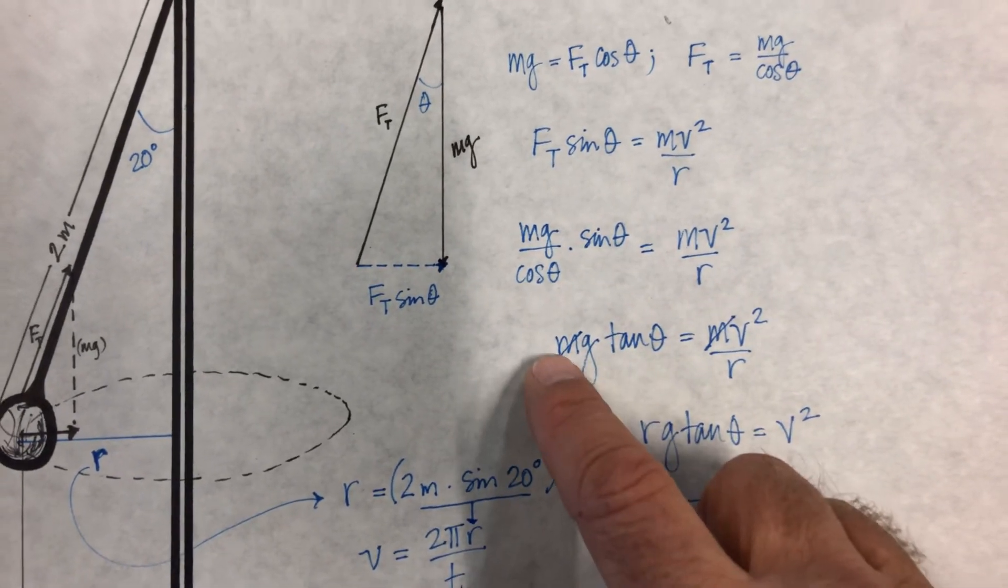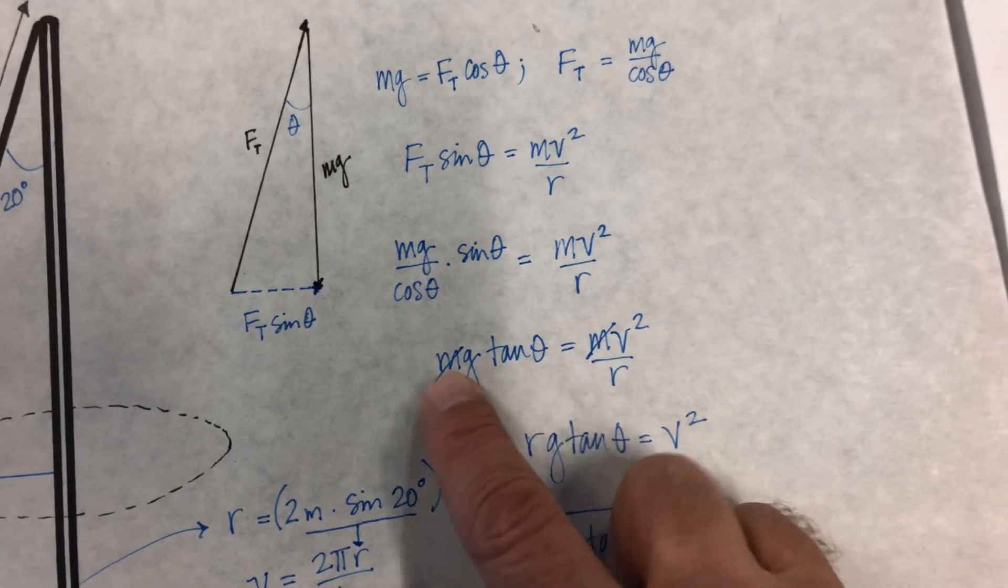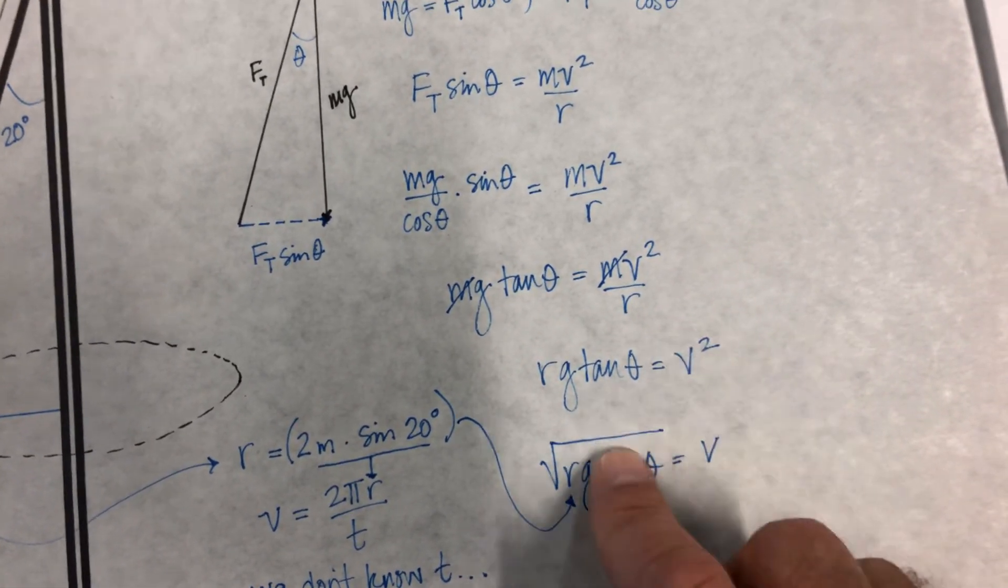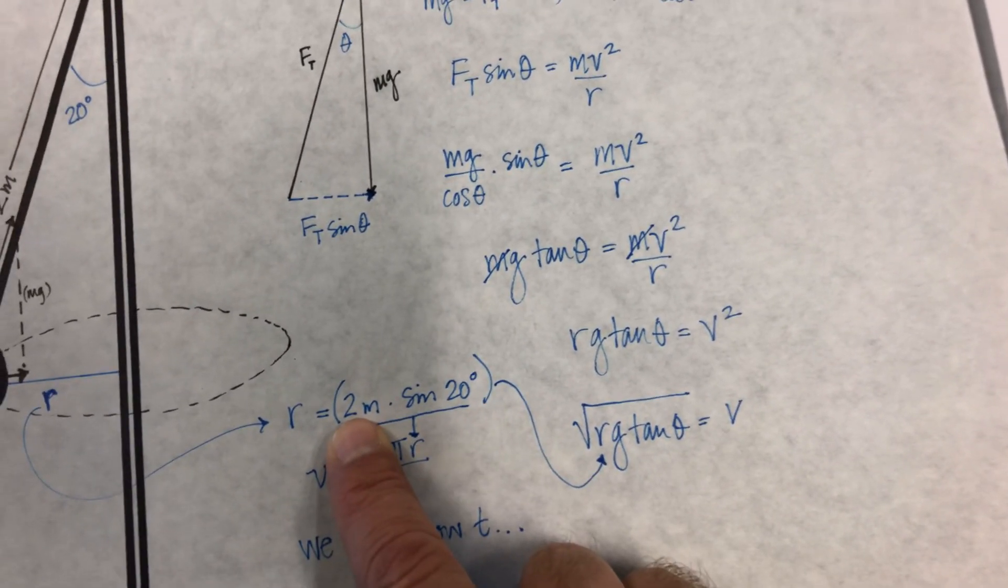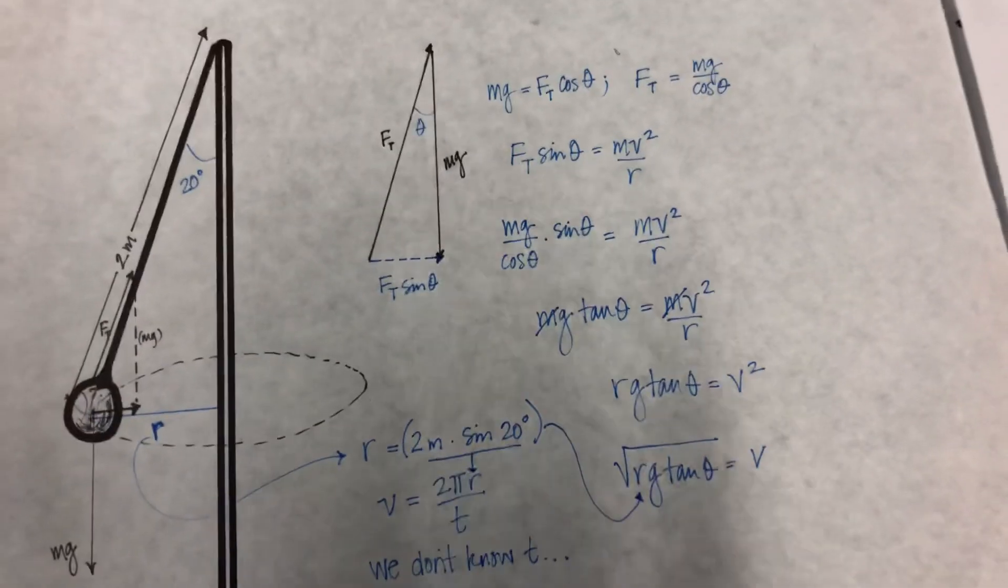Sine over cosine is tangent. Now we have mg tangent theta equals v squared over r, and you'll notice both m's cancel. So rg tangent theta is v squared. Square root of rg tangent theta is v. Remember, r comes from 2 meters times sine of 20 degrees. Plug all those in. You have v.